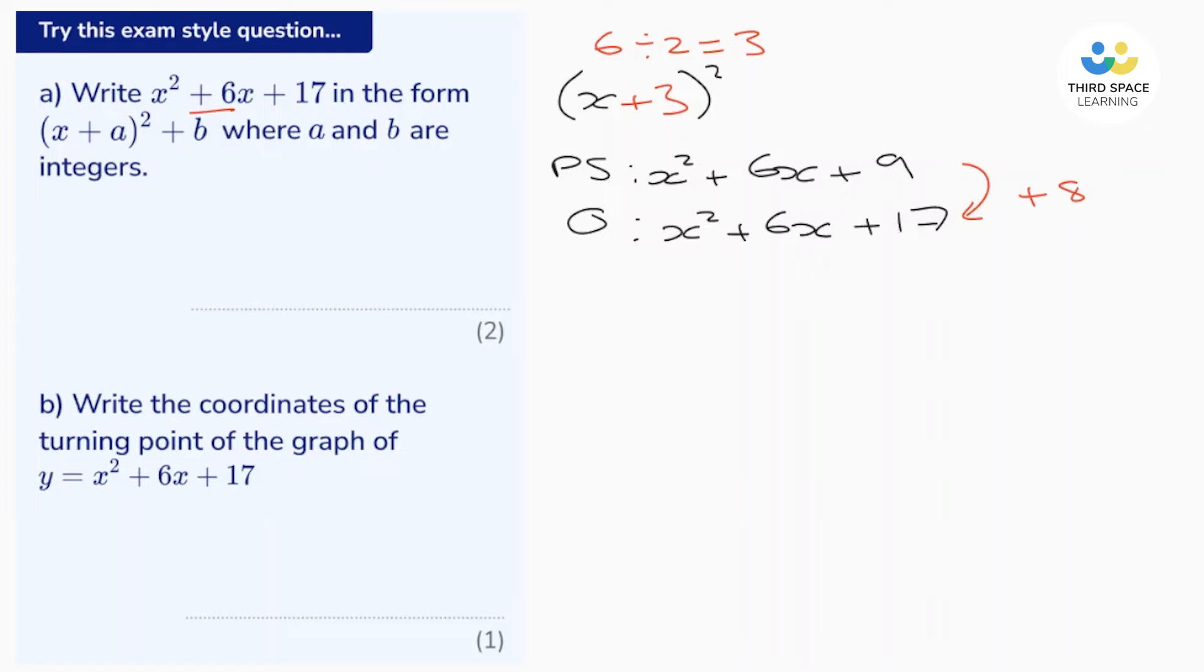So that means that the completed square format is (x + 3)² which was the perfect square, and then to change that into the original expression we just add 8 to it. So let's see where those marks come from. We get one mark for a which is 3, and one mark for b which is 8.